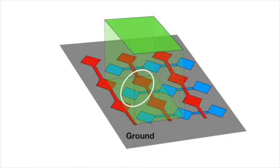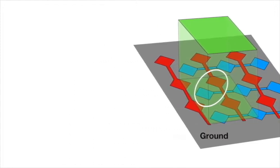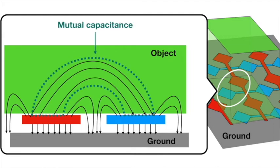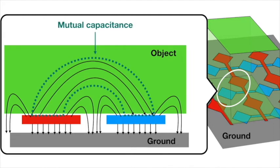When an object is placed on our textile sensor, Capacitivo recognizes it by sensing the change in capacitance of electrodes affected by the material of the object. To make this signal more pronounced in response to the small change, we measured mutual capacitance and self-capacitance, then used the aggregation of the two to recognize objects with different materials.